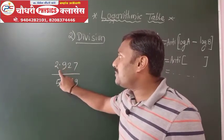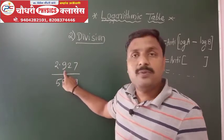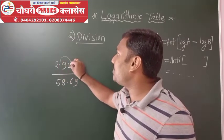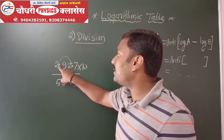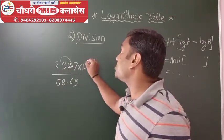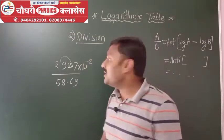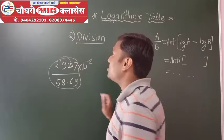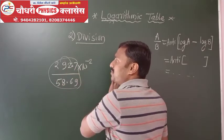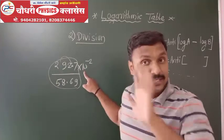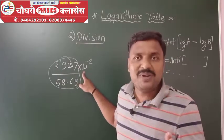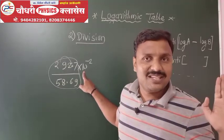Suppose the calculation is 2.927 divided by 58.69. Here the numerator is smaller than the denominator. So we shift the decimal point: 2.927 becomes 292.7, and we multiply by 10 raised to minus 2 to compensate. This way the numerator is now greater than the denominator.